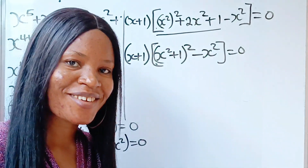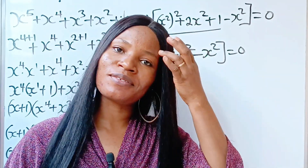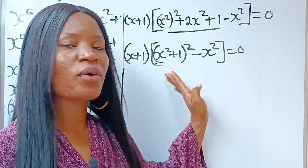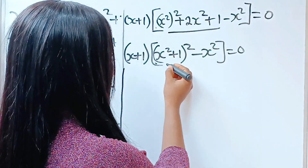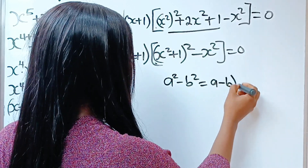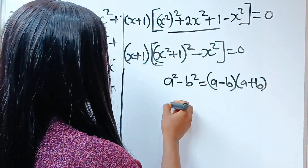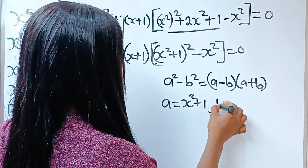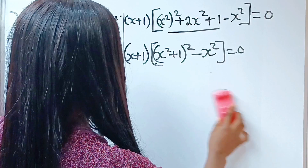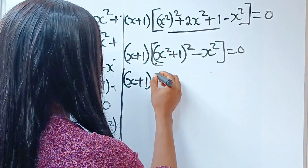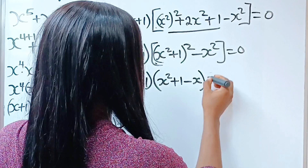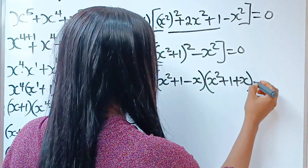Everything is equal to 0. This is interesting. Notice that we have another algebraic identity here — a squared minus b squared. And a squared minus b squared is equal to a minus b multiplied by a plus b. In this case, our a is x squared plus 1, while our b is x. So, we are going to substitute this in. We have x plus 1 multiplied by x squared plus 1 minus x, multiplied by x squared plus 1 plus x, is equal to 0.